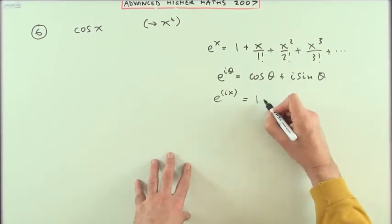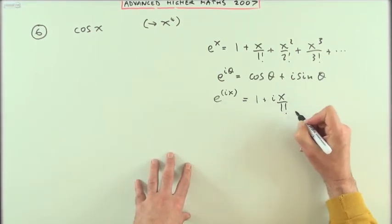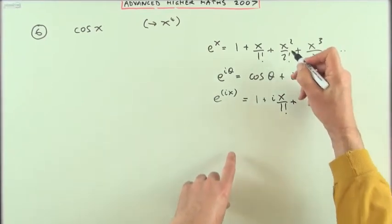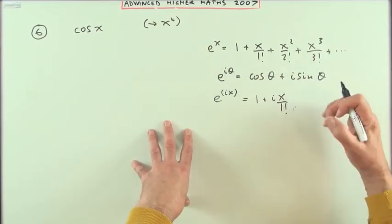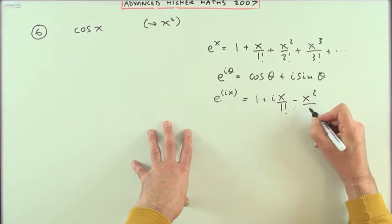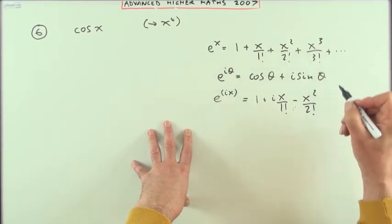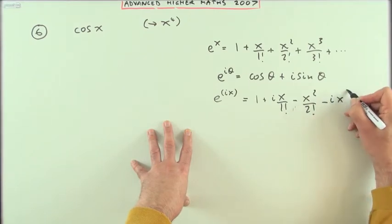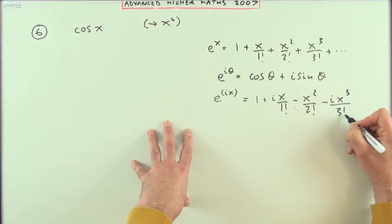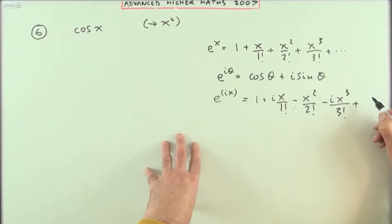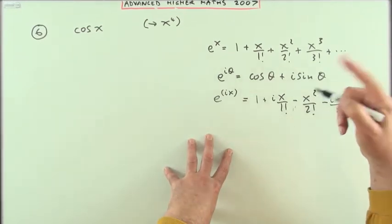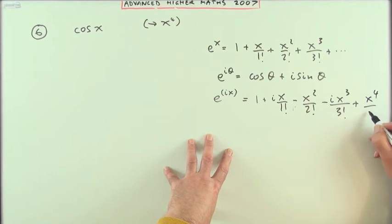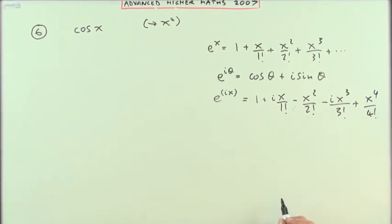So the first one would just be 1, the next one would be ix over 1 factorial, the next one would be i squared x, so that's negative x squared over 2 factorial, the next one would be i cubed, so that's negative ix cubed over 3 factorial, plus i to the power 4 which is back to 1 again, so just plus x to the 4 over 4 factorial and so on.